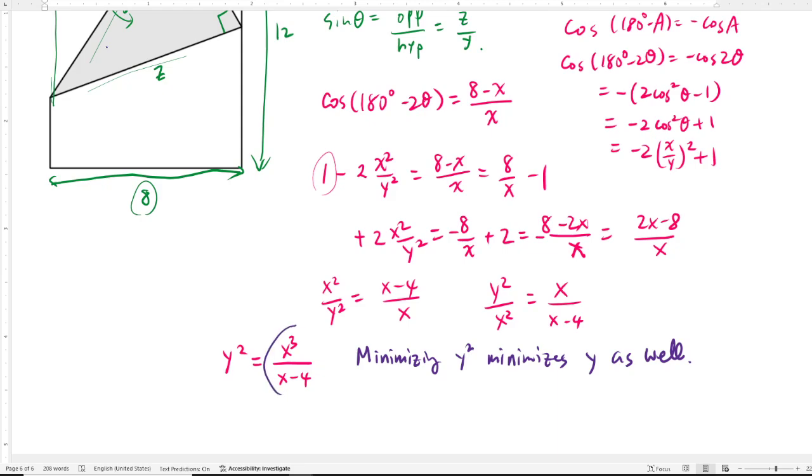So we're just going to take this function and we'll try to minimize this. So we're going to differentiate x cubed over x minus 4 using the quotient rule, which gives you 3x squared times x minus 4 minus x cubed times 1 over x minus 4 squared. And we know that this will be minimized when this derivative is equal to 0.